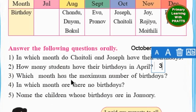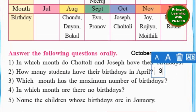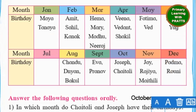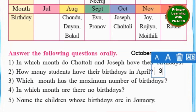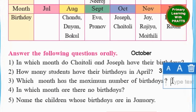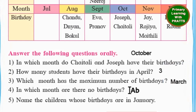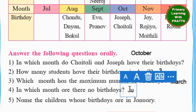Which month has the maximum number of birthdays? Looking at our birthday chart, we can see it is March. March has 1, 2, 3, 4 birthdays, so we will write March. In which month are there no birthdays? In the month of July. We will write July.